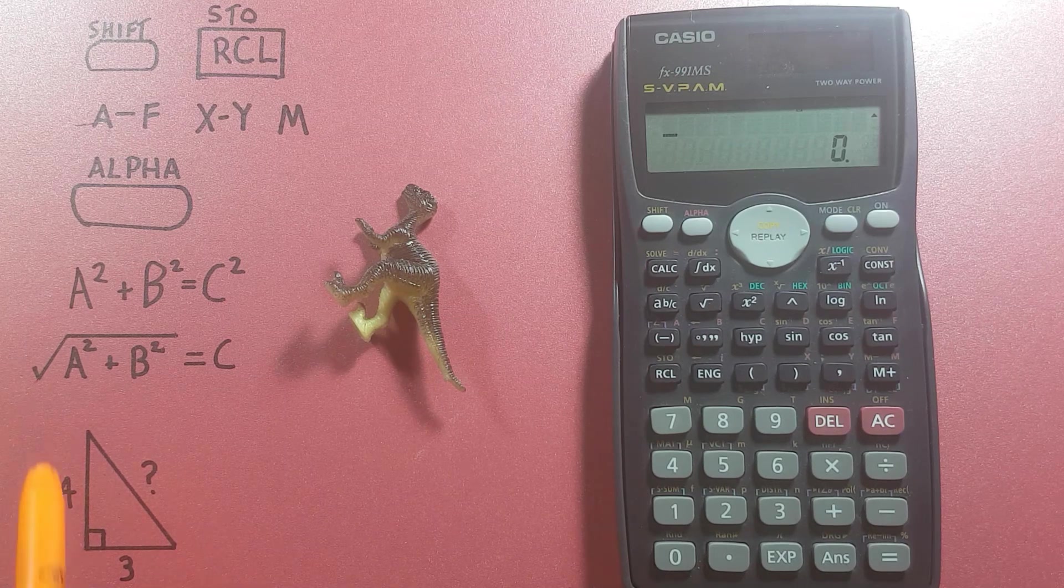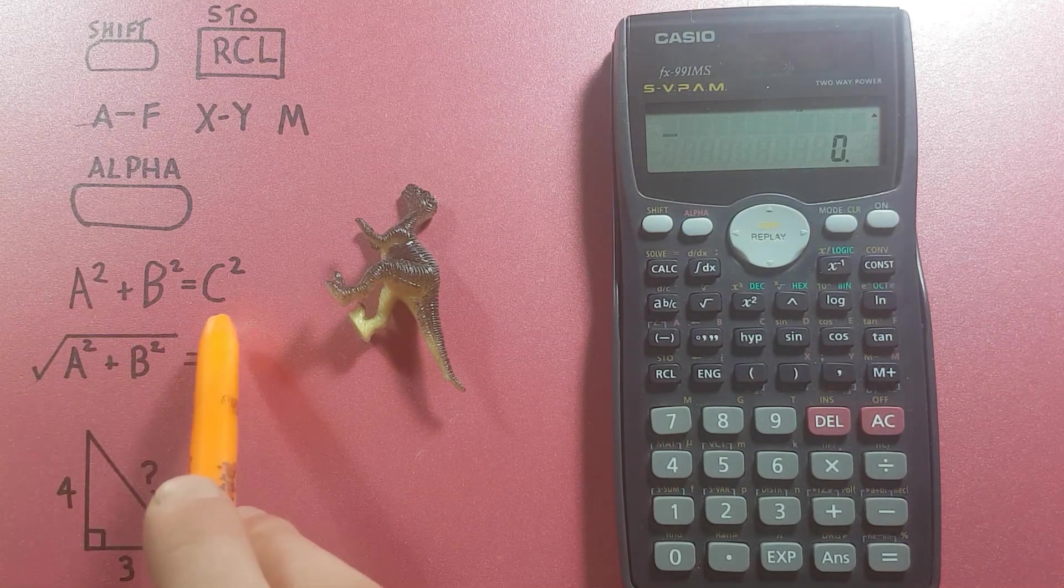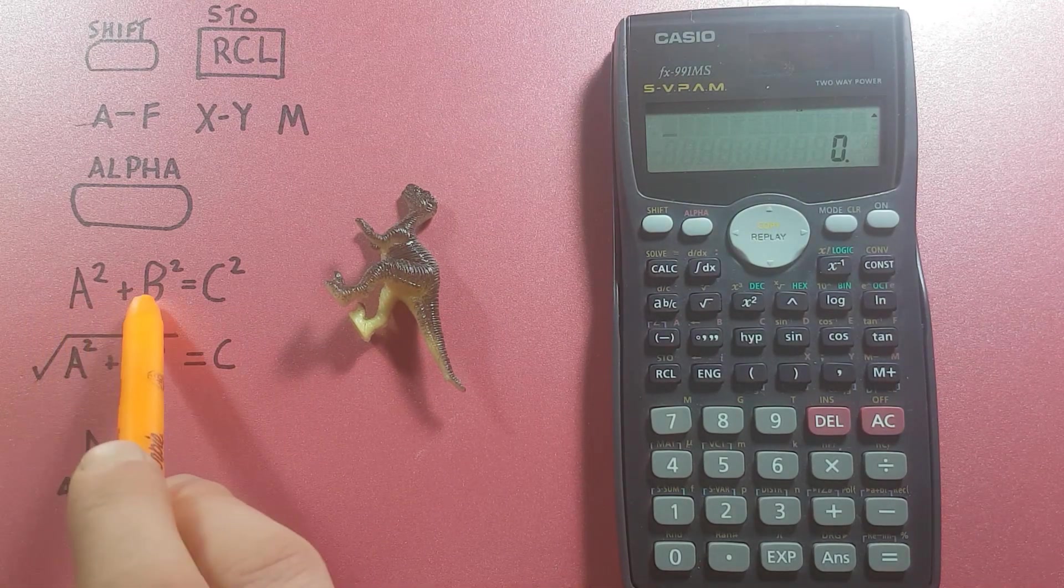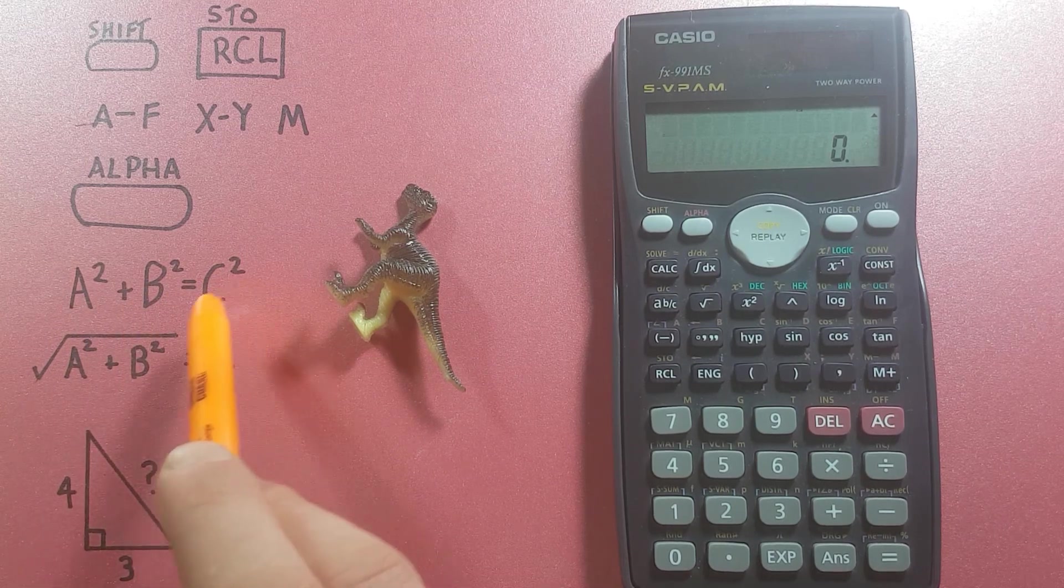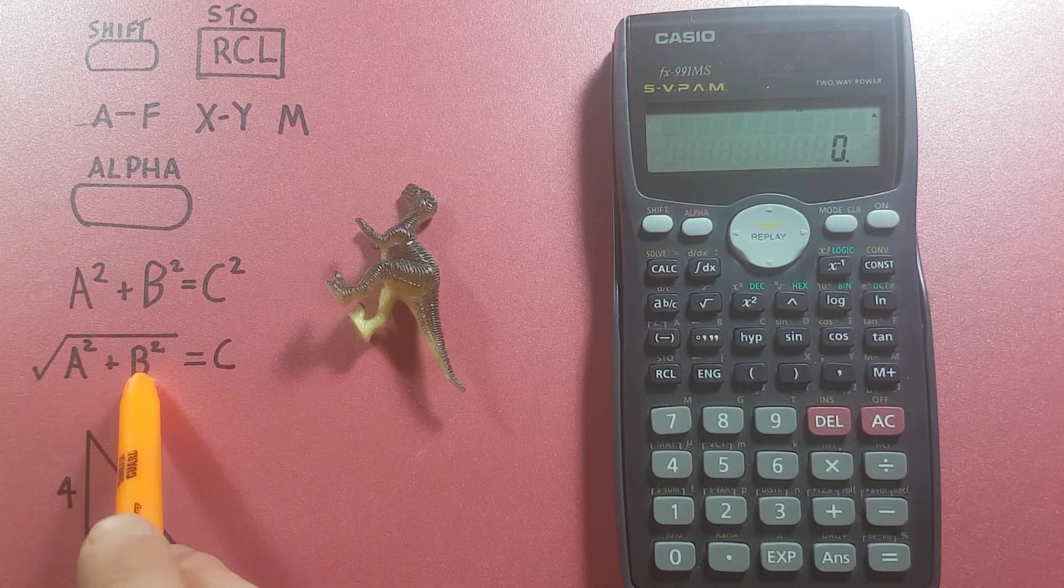An example of this would be using it for Pythagoras, which we know is a squared plus b squared equals c squared and can be written as the square root of a squared plus b squared equals c.